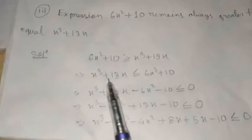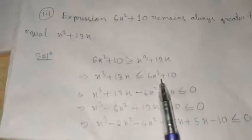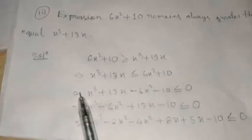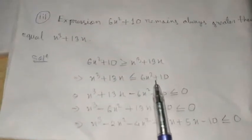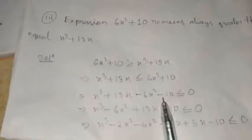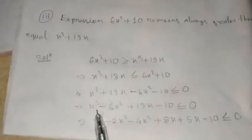We transpose 6x squared plus 10 to the left hand side. So the arranged expression becomes: x cubed minus 6x squared plus 13x minus 10 less than or equal to 0.